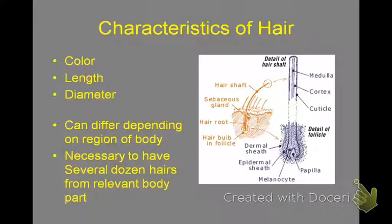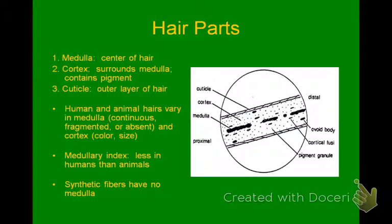Hair characteristics: some can be changed, and some cannot. Obviously, the color and the length of hair can be changed. The diameter of a hair can't be changed — that's dependent on the person. Hair can also differ depending on the region of the body. If you're looking to do comparison, you need about several dozen hairs as standard reference samples — for instance, from someone's head — to compare with a hair found at a crime scene and determine whether it's from that particular person, to individualize that hair. It's sort of difficult; it's not a perfect science.